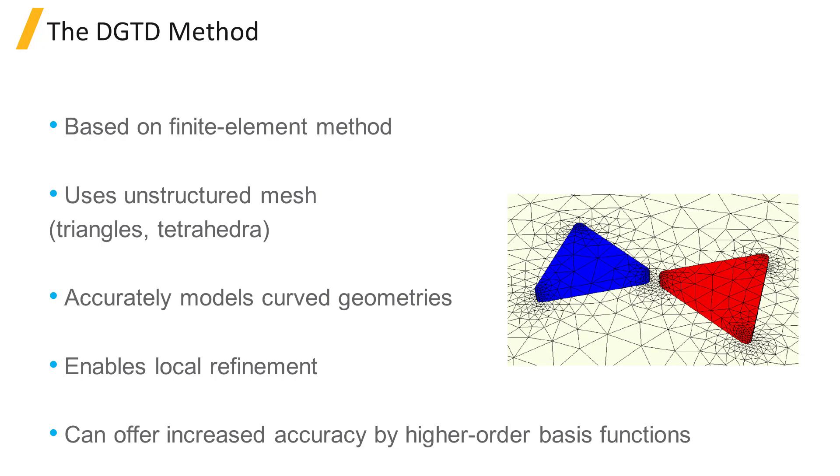However, more elements also increase the simulation time. By default, the mesh generator will use approximately 2 elements per shortest wavelength in each material. In some cases, it is necessary to add a mesh constraint to refine the mesh locally.